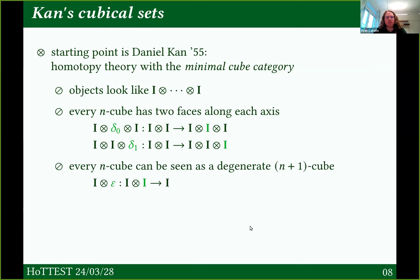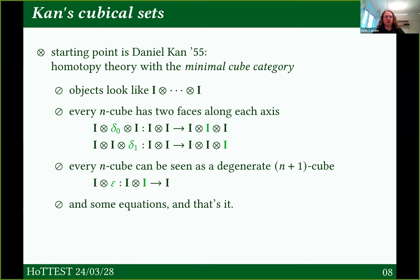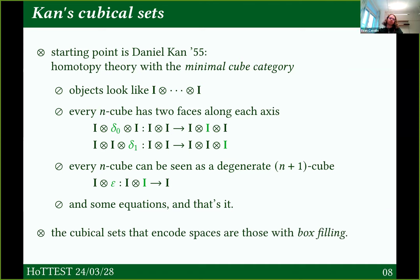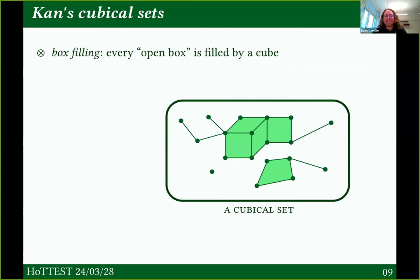Every n-cube can also be seen as a degenerate (n+1)-cube, corresponding to maps which delete a coordinate — projecting down from a higher cube to a lower cube. Those are the morphisms in the cube category, generated by these under composition and some equations, and that's all we have. Not every cubical set really counts as a space. The cubical sets that encode spaces have to have this extra property I'll call box filling — Kan calls them something like E-complexes.